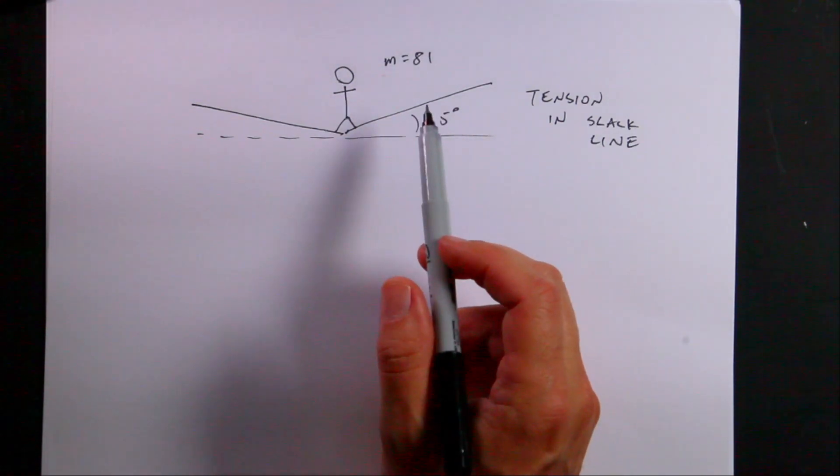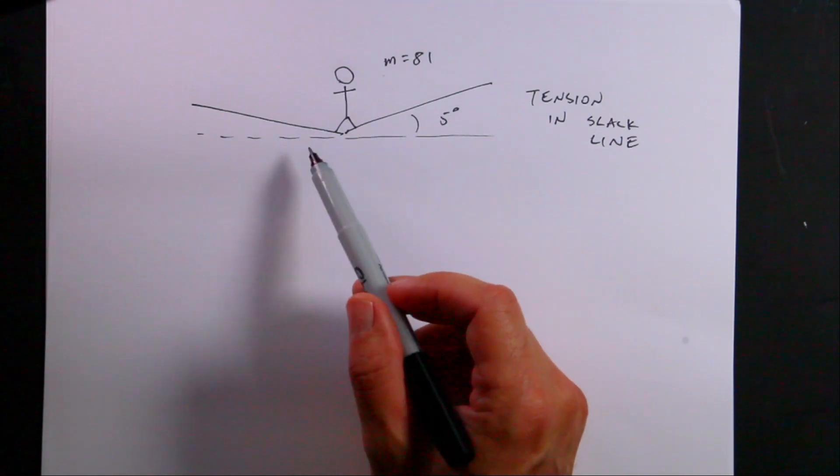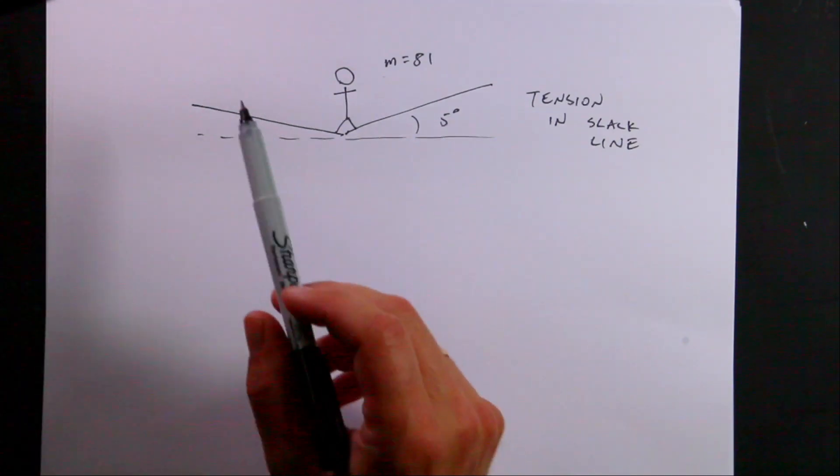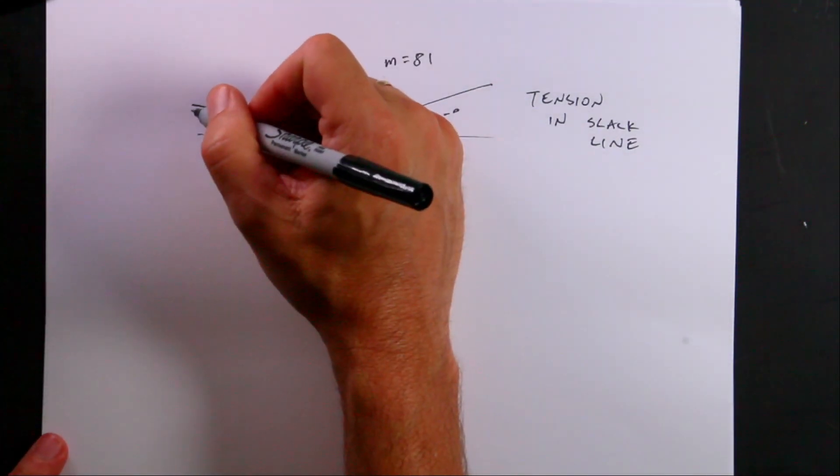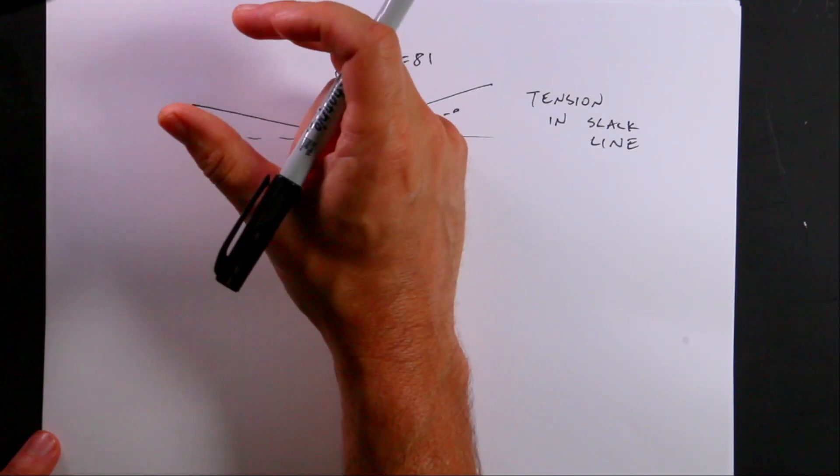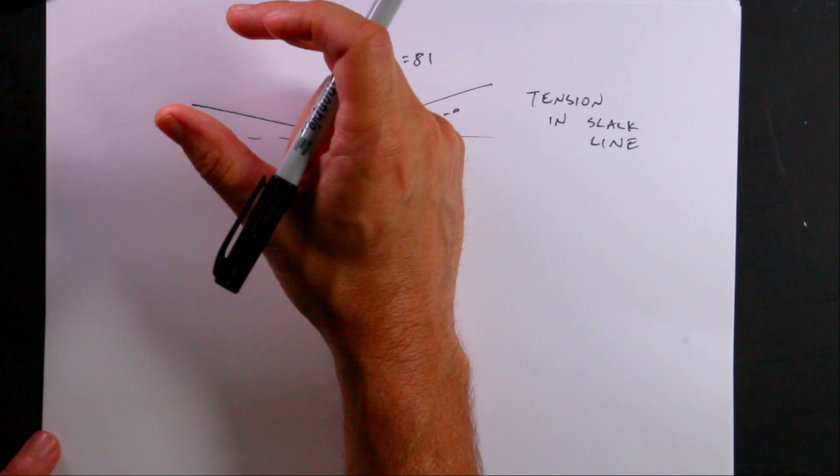These were kind of popular. I don't see them too much lately, but it's a slack line. So the idea is to take a thick, it's like a thick, it's not a rope, it's like a strap.